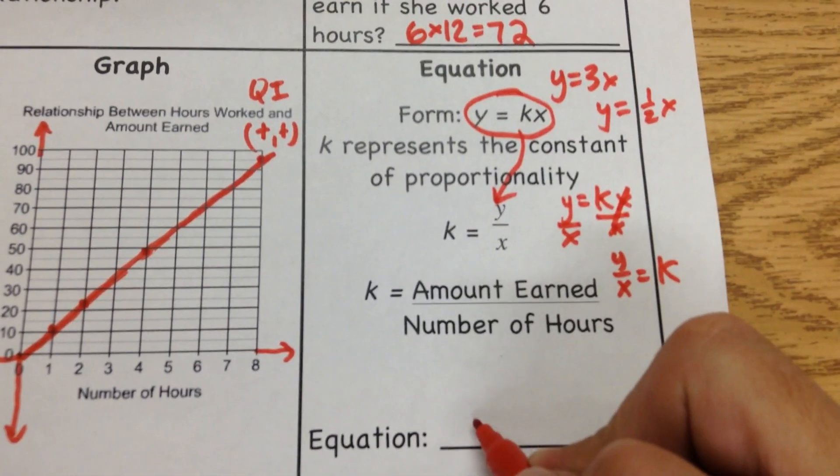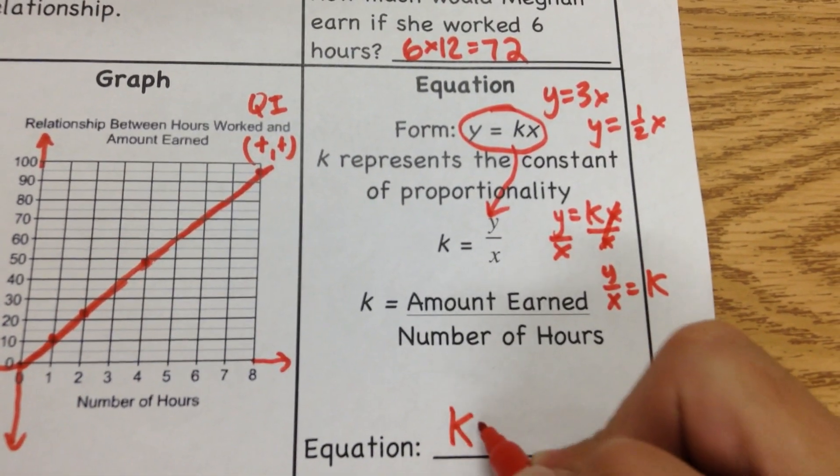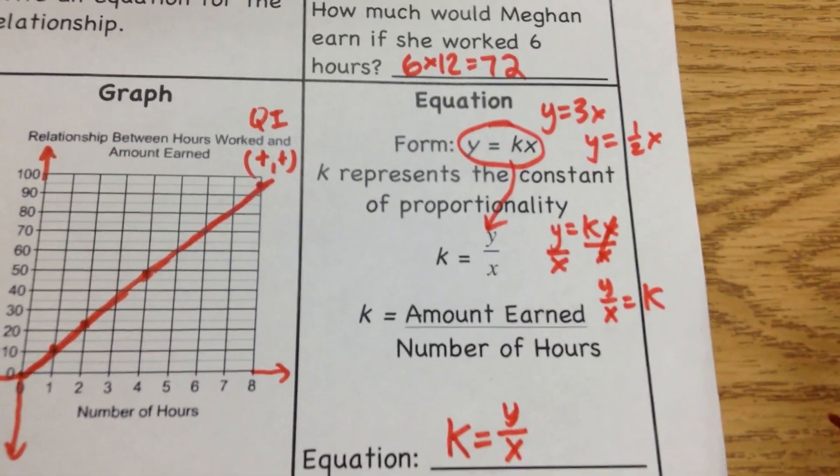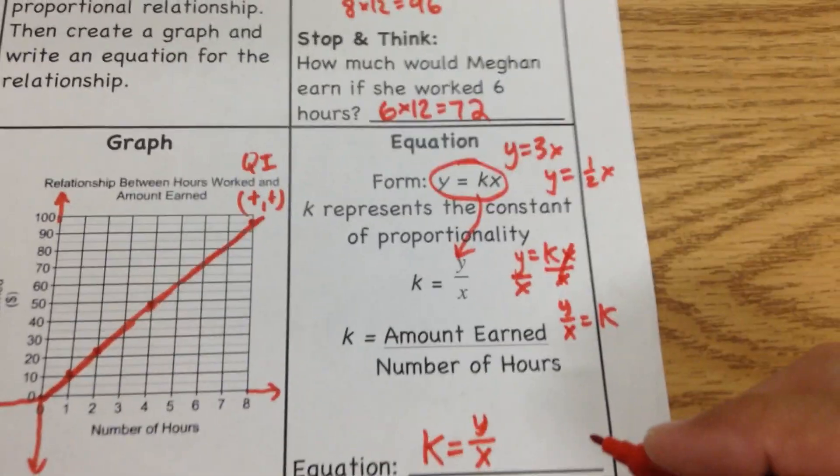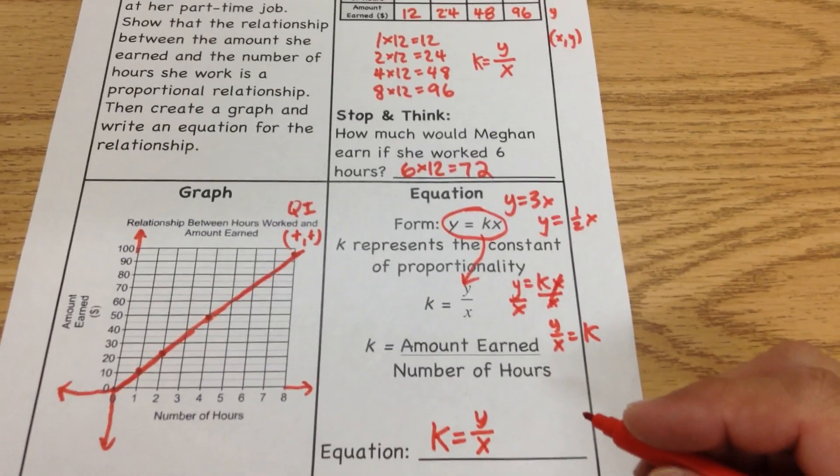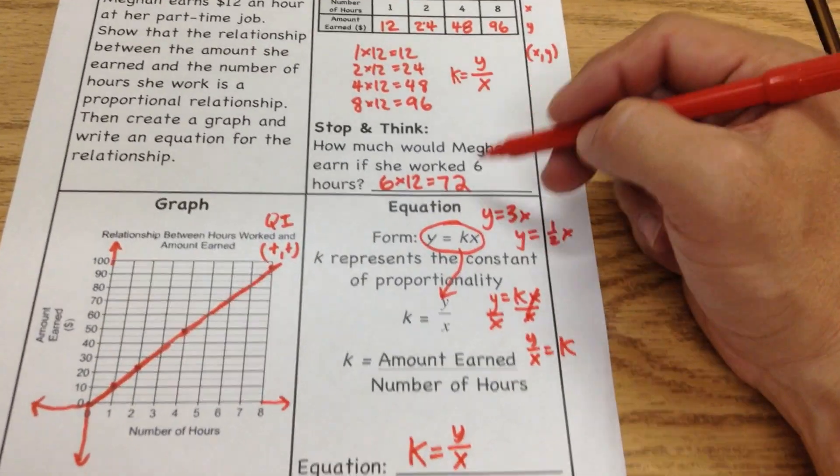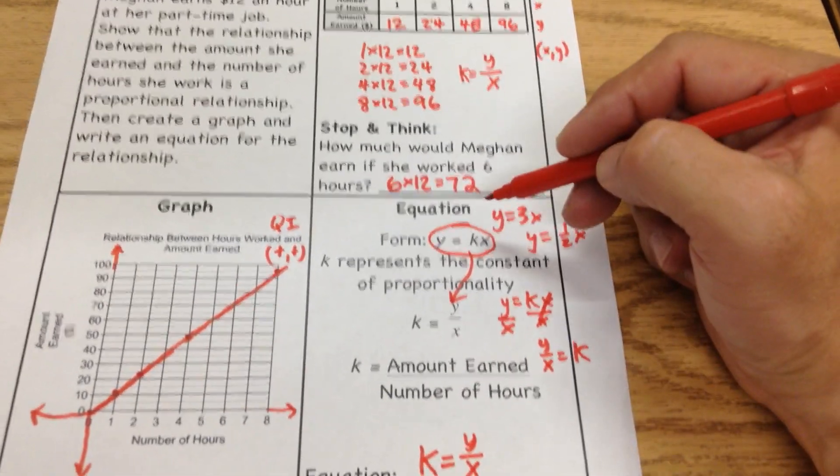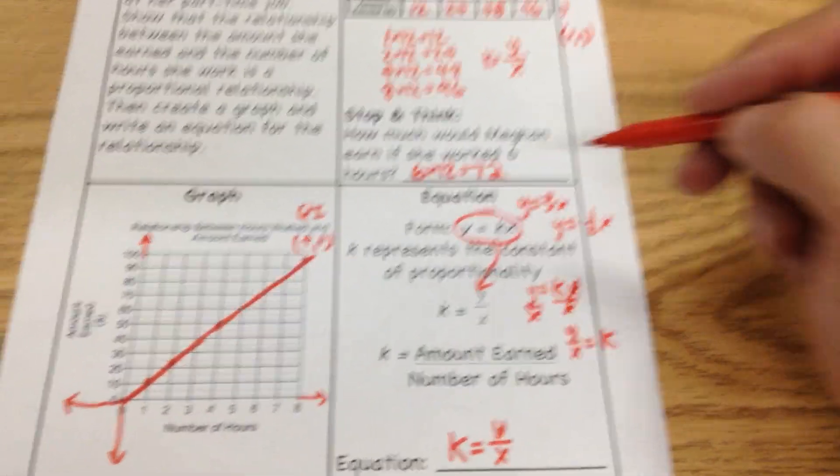So again, the equation that we're using, the constant is equal to the y divided by the x, and in this case, we've got 12 for all these. So then if you're doing this problem, again, you just would say, hey, 6 hours, I know that she made $12 an hour. 6 times 12 is 72.